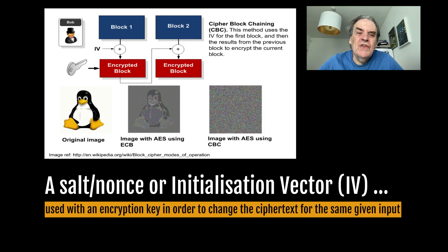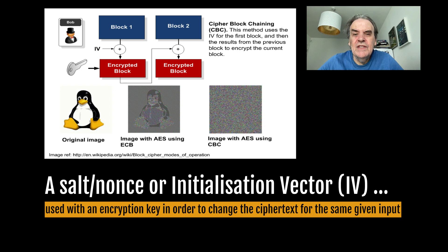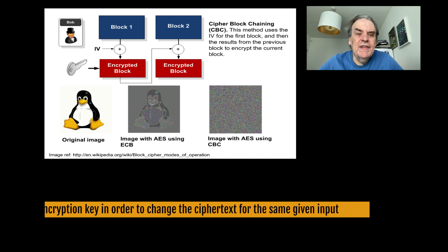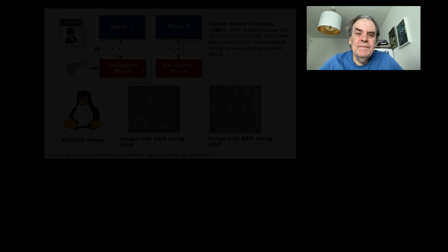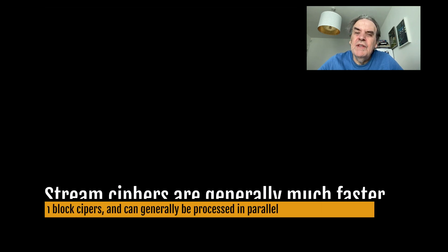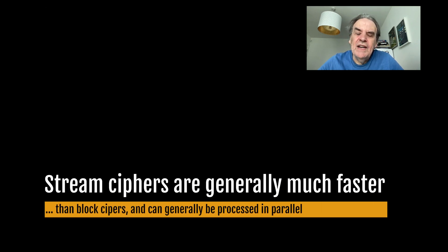A SALT, NONCE, or initialization vector is used with an encryption key in order to change the ciphertext for the same given input. Stream ciphers are generally much faster than block ciphers and can generally be processed in parallel.